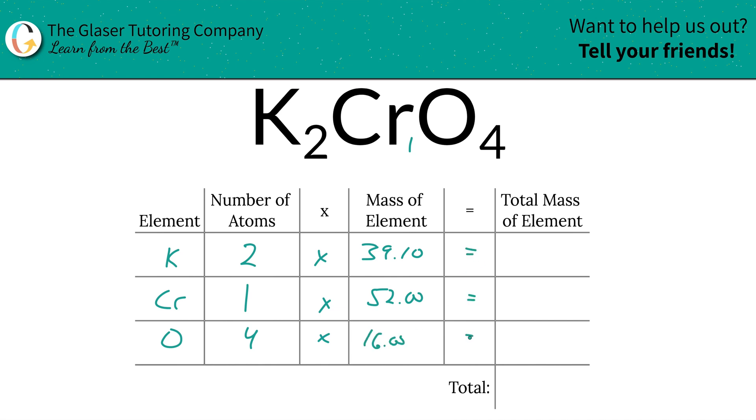And then to find the total mass of each element in the compound, we're simply going to multiply this row. So that's going to be 78.20 for potassium. Chromium, 52.00, nice and easy. And then for oxygen, it's going to be 64.